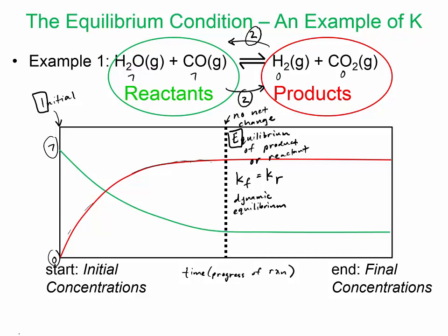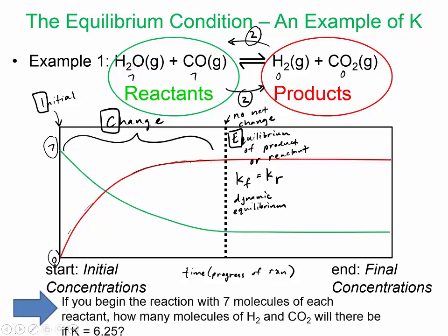This whole segment here — anywhere where there's slope — represents the 'change' portion. This is the start where time is zero and the reaction hasn't started yet. Where there is net change, that represents our change line on an ICE table. So the question is: if we begin the reaction with seven molecules of each reactant, how many molecules of H₂ and CO₂ will there be if K is 6.25? Let's set up our ICE table on the next slide.